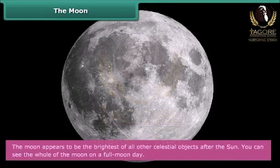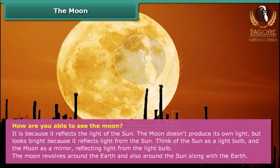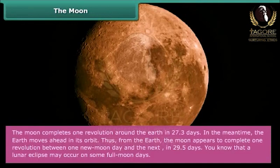The Moon appears to be the brightest of all celestial objects after the Sun. You can see the whole of the Moon on a full Moon day. The Moon does not produce its own light, but looks bright because it reflects the light from the Sun — think of the Sun as a light bulb and the Moon as a mirror. The Moon revolves around the Earth and also around the Sun along with the Earth, completing one revolution around the Earth in 27.3 days.